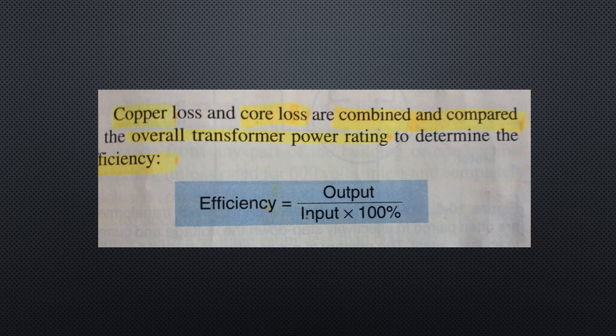The copper loss and core loss are combined and compared to the overall transformer power rating to determine efficiency using the formula shown on screen. The efficiency is normally listed on the transformer nameplate.